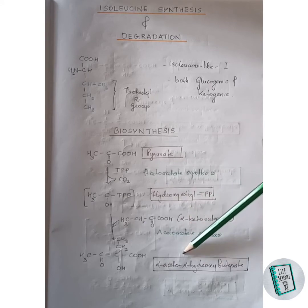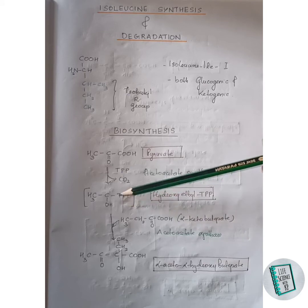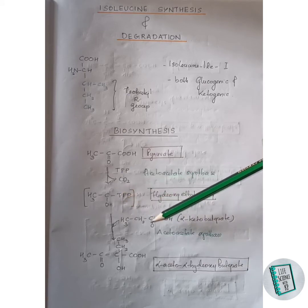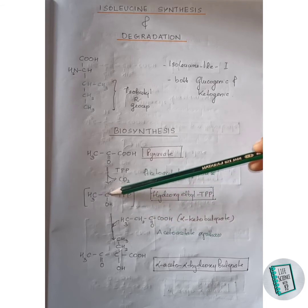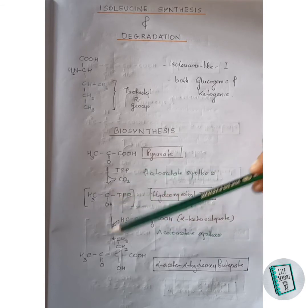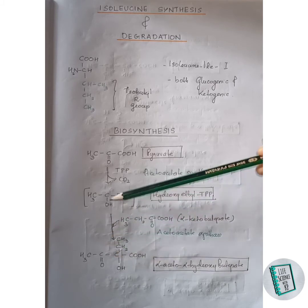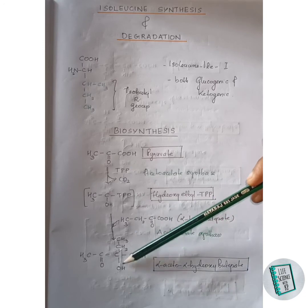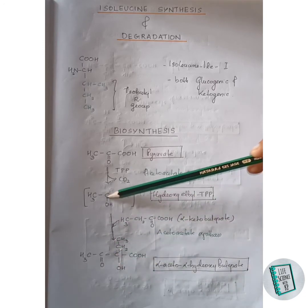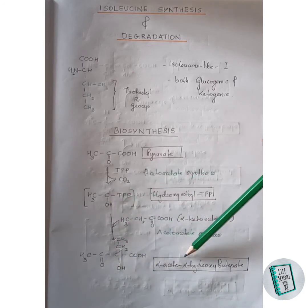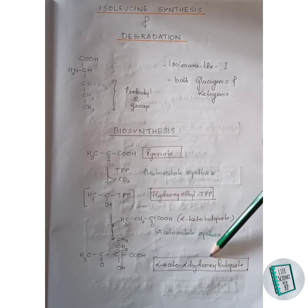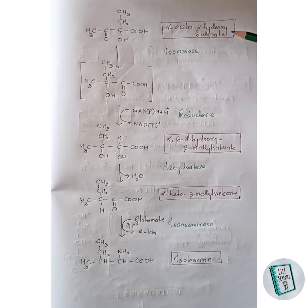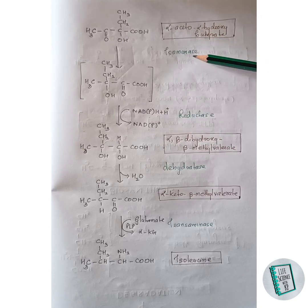This hydroxyethyl TPP intermediate joins with alpha-ketobutyrate to form alpha-aceto-alpha-hydroxybutyrate. The TPP is removed, and the alpha-ketobutyrate joins via its keto carbon to the carbon of hydroxyethyl TPP. The OH group is formed, leaving the C=O as a double bond. Thus alpha-aceto-alpha-hydroxybutyrate is formed, which then undergoes isomerization in the presence of isomerase enzyme to form an intermediate.